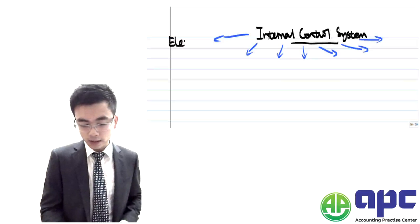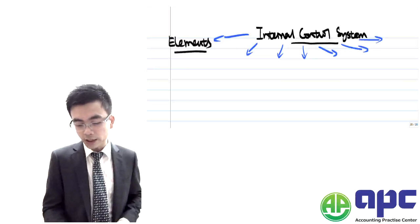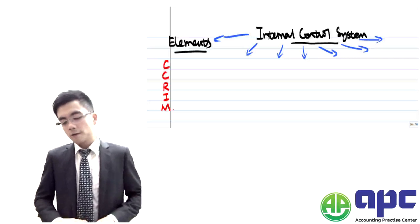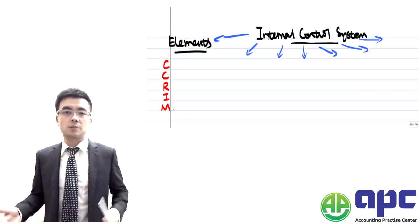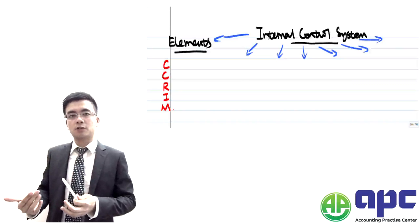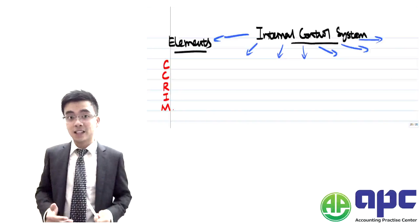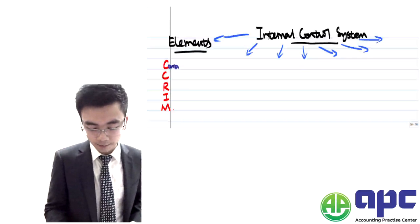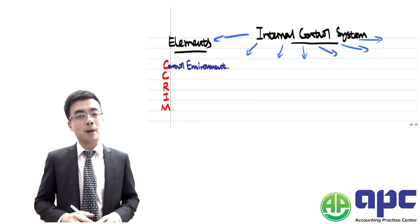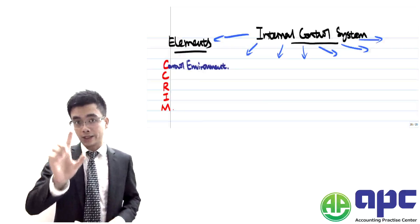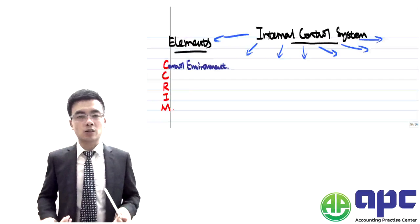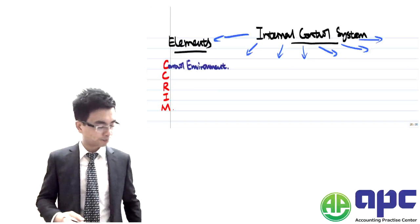Firstly, we're going to look at the basic elements within the internal control systems, using a mnemonic called CCRIM. The internal control system exists because we want to use it to help the company continuously make money for the shareholders. The first component is the control environment — we're going to embed the culture into employees' minds so that they are thinking about internal controls all the time when performing their roles.